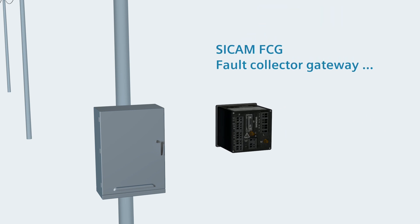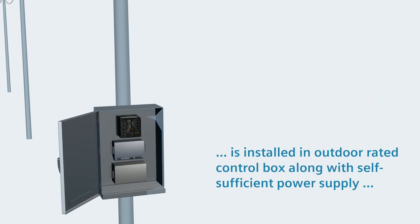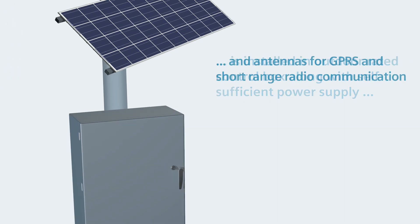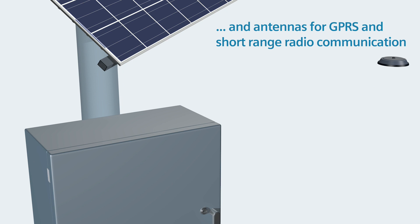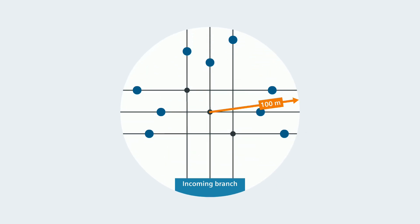As a gateway between CCAM FSIs and the control center or the cloud, you use a CCAM FCG. You install it in an outdoor rated control box on the utility pole along with a self-sufficient power supply. The antennas for GPRS and short-range radio communication are mounted on the control box. A CCAM FCG can collect and process the data of up to nine CCAM FSIs and that up to a distance of 100 meters line of sight.